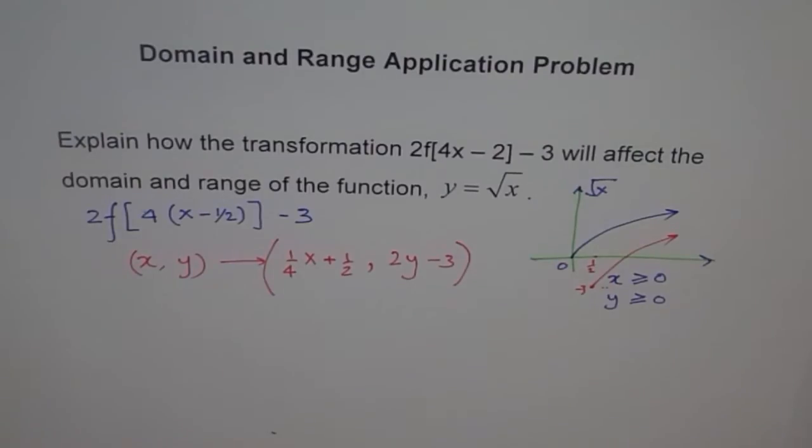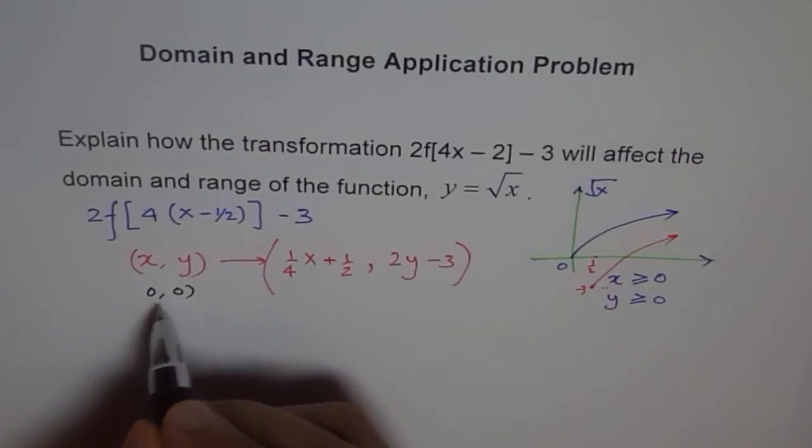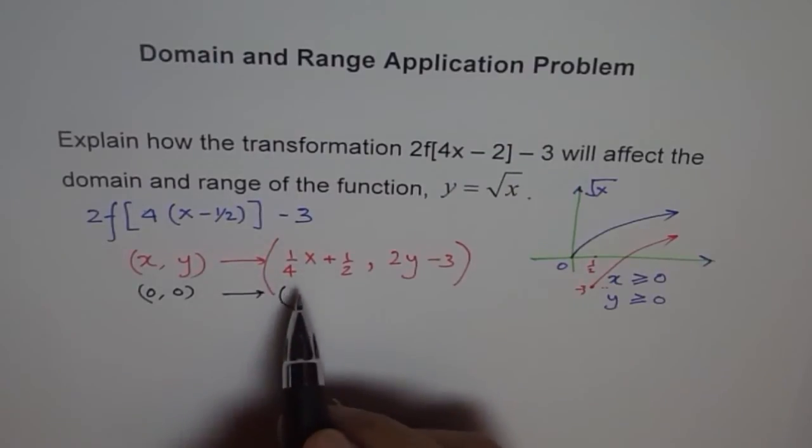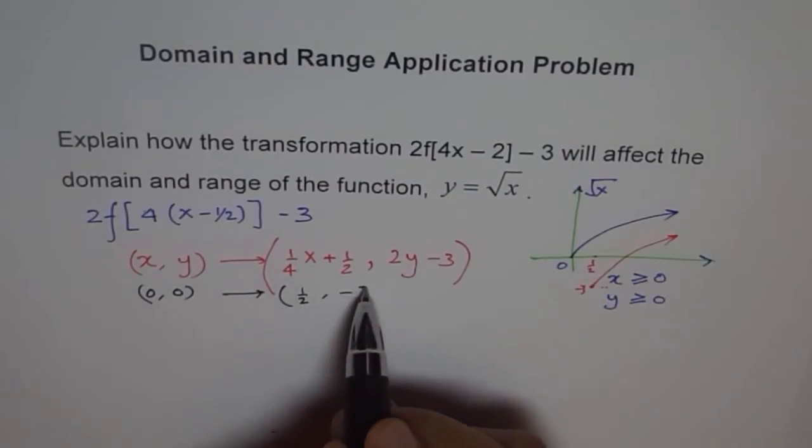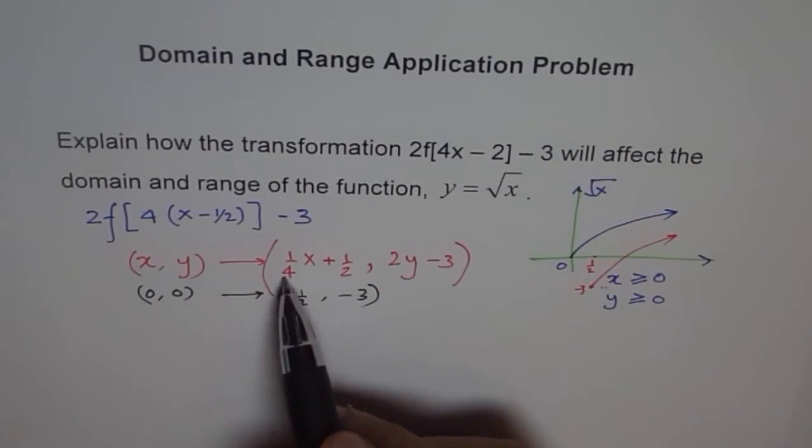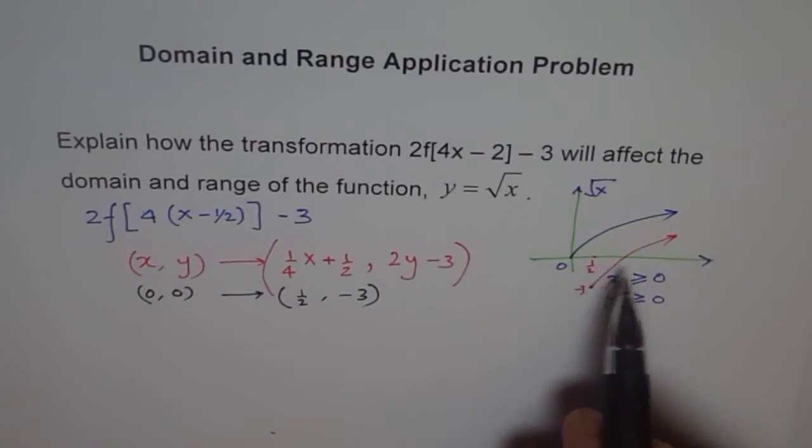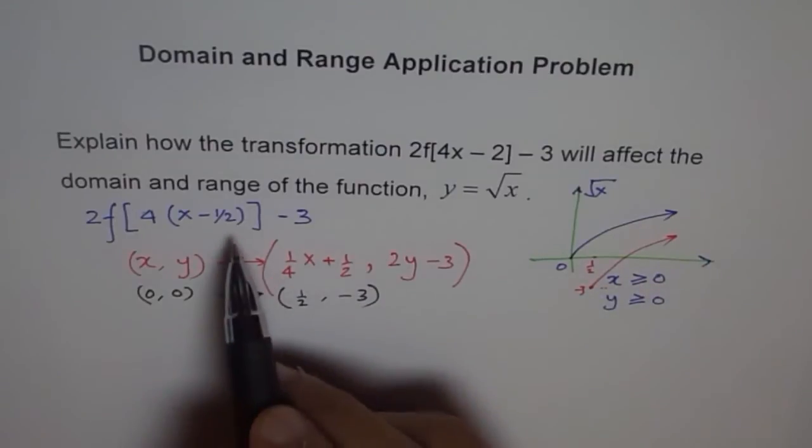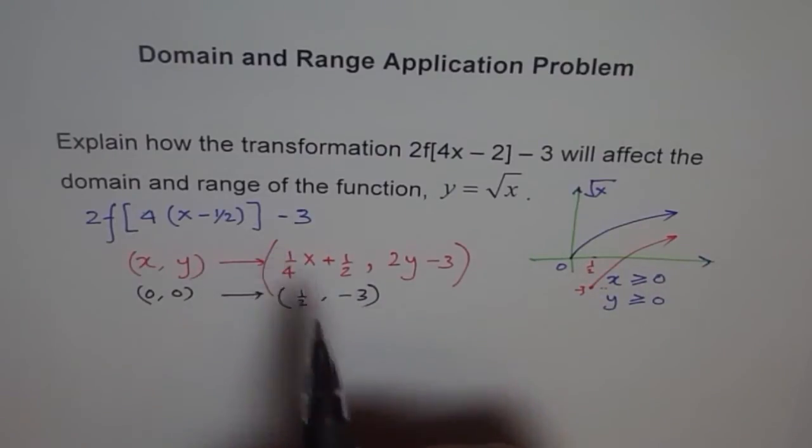So if I write 0, 0 here, then how will my 0, 0 get transformed? So 0, 0 gets really transformed to 0 times 1 over 4 is 0 plus half gives me half. And this gives me minus 3. So this is what I got here. So therefore, the transformation here is only that this comes here and gets vertically stretched and 1 over 4 horizontally compressed, so it goes steeper. But domain range is only affected by translations.